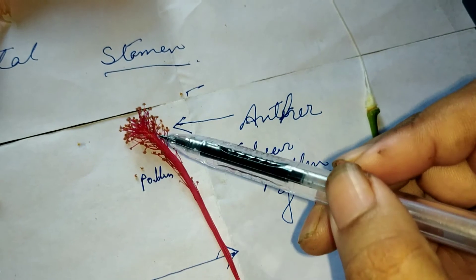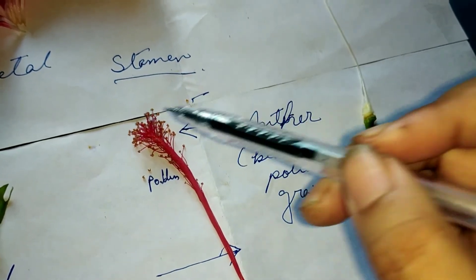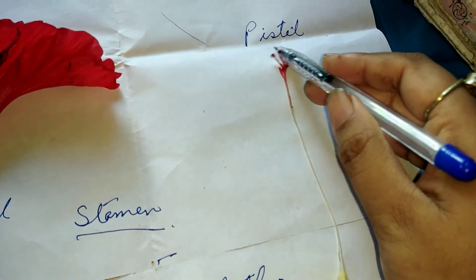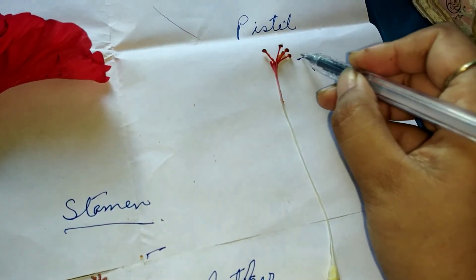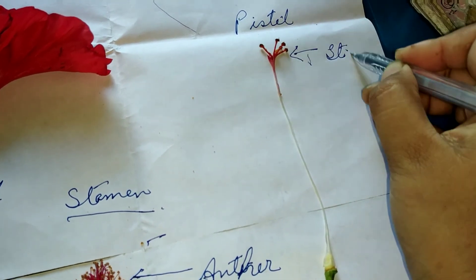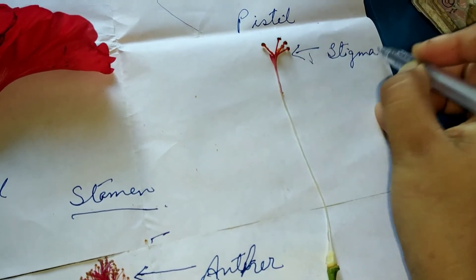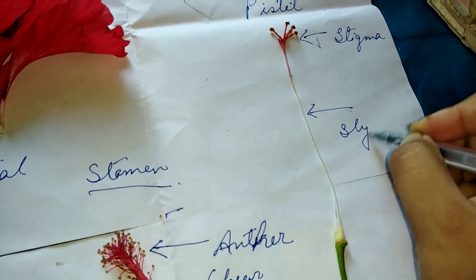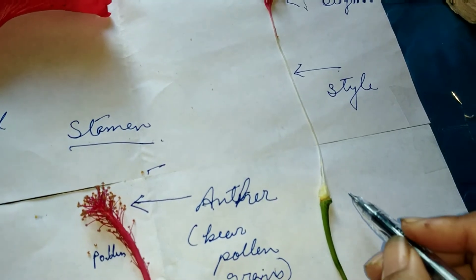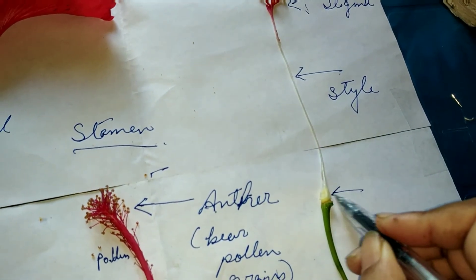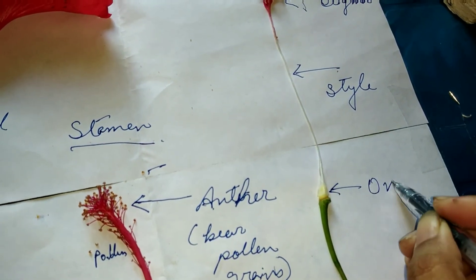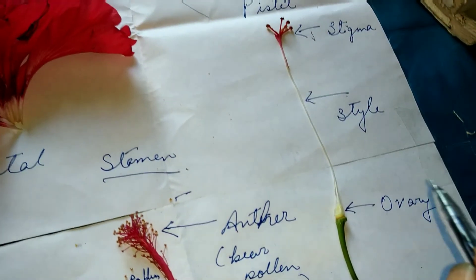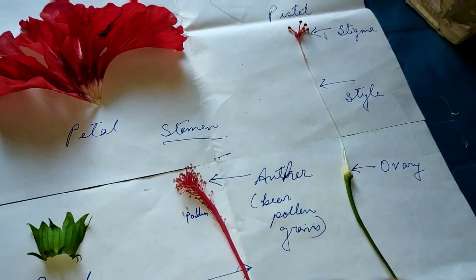During pollination, the pollen grains travel to the stigma — the stigma part of the pistil. The stigma is the top part. The neck part of the pistil is called the style. And the lowermost part is known as the ovary. The ovary contains the ovules inside it. I hope you are clear with this whole part.